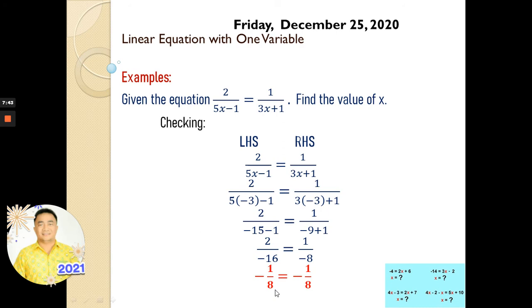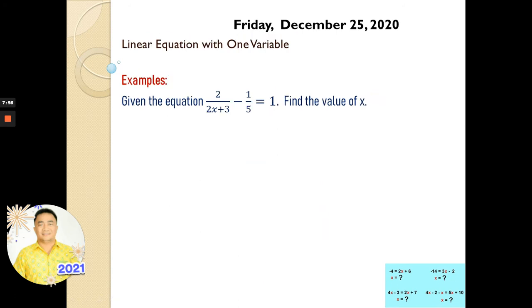Now we go to the next example. We have the equation: 2 over (2x plus 3) minus 1 over 5 is equal to 1. Find the value of x.